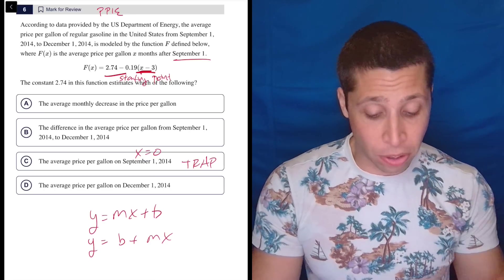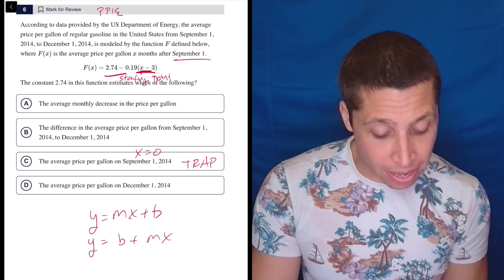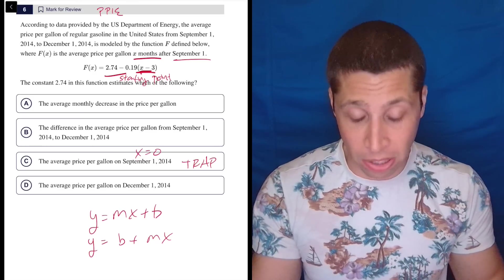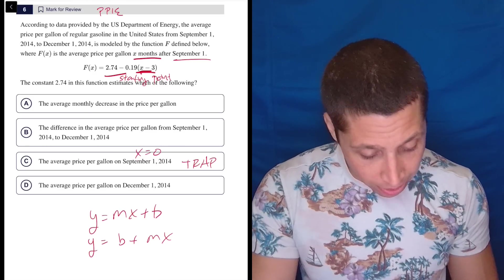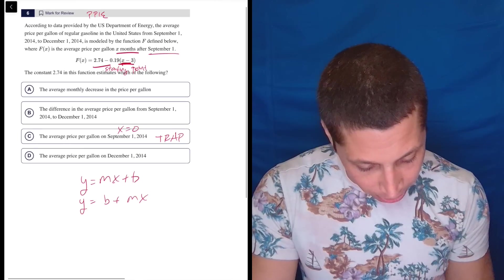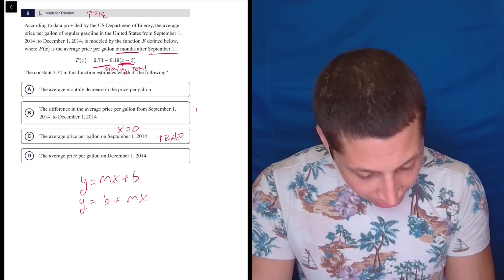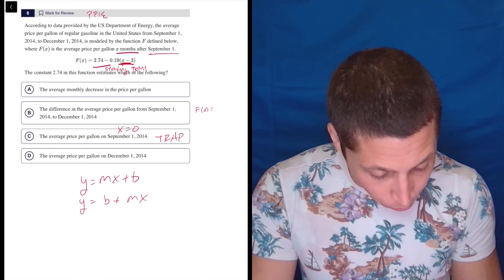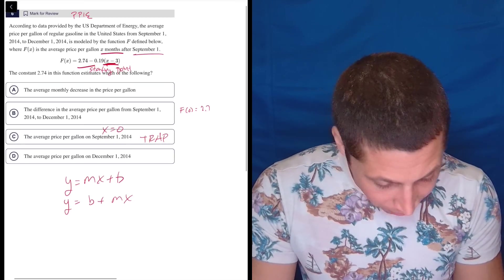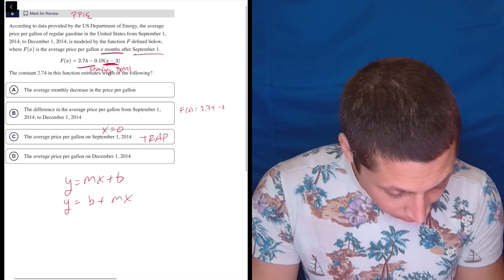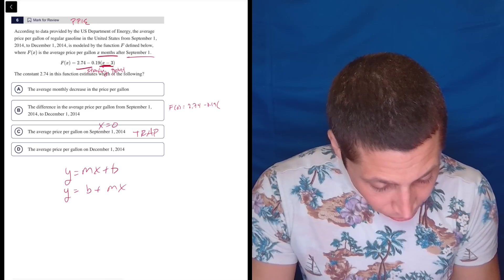Because that's September 1st. That's the starting amount, right? x months after September 1st, September 1st, 0 months after September 1st, right? So let's plug that in. Let's run out of space. It's getting messy here. So that would be f(0) is equal to 2.74 minus 0.19 times (0 minus 3).